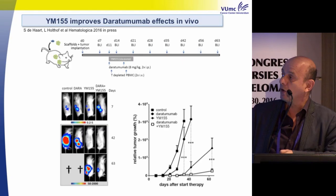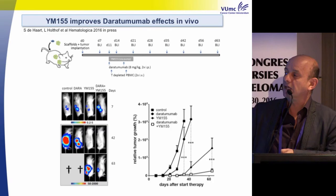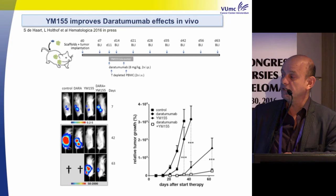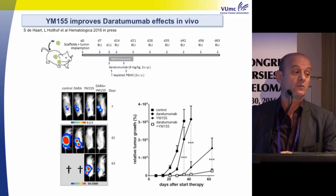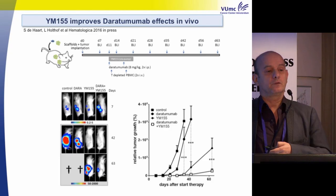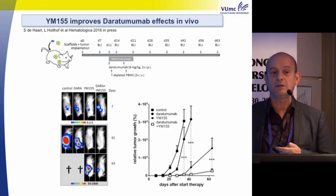This can also be modulated in vivo: in the mouse model, daratumumab alone shows modest activity, YM155 alone has moderate anti-tumor effect, but the combination of daratumumab and YM155 leads to strong tumor suppression. This confirms that immune resistance is a separate phenomenon from immune suppression in the microenvironment, and it must be modulated to achieve better immune responses.